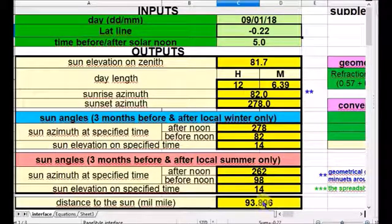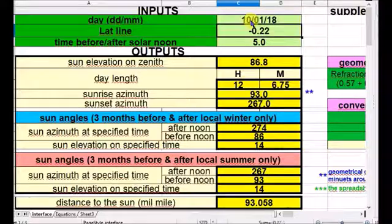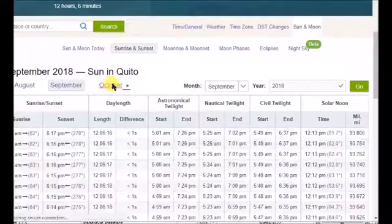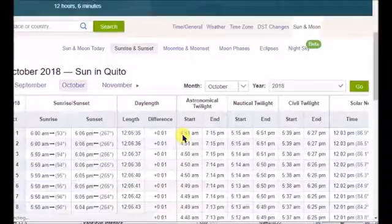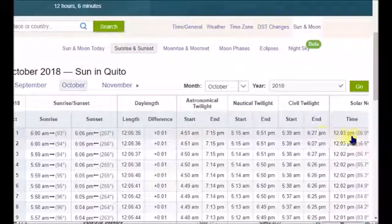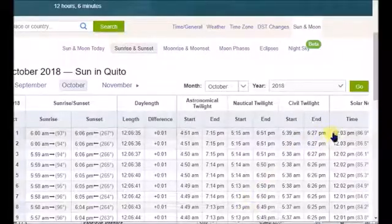93.806, sometimes it shifts by 0.001 but maybe not more than that. So let's move to next month, 1st of October. 86.9, 86.8. Distance to the sun 93.058 - 93.058. Same, 0.05.